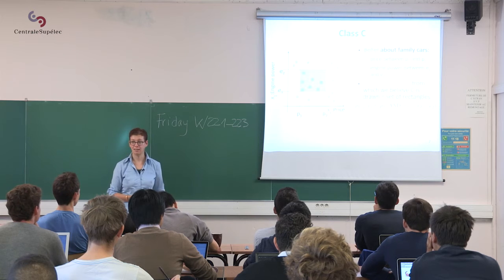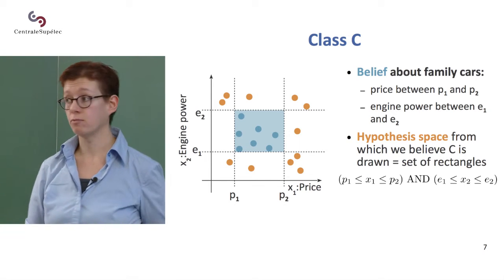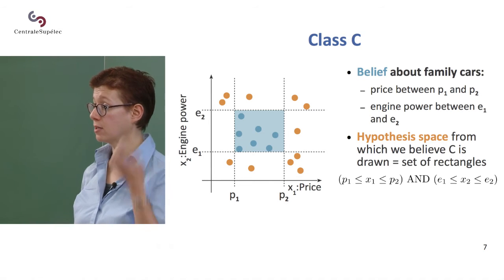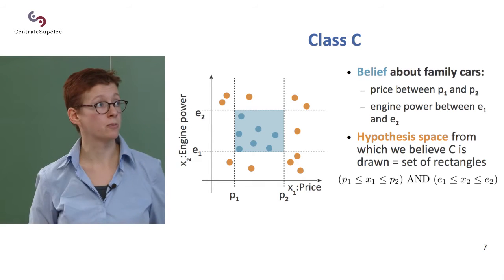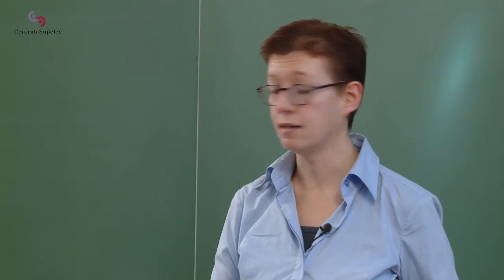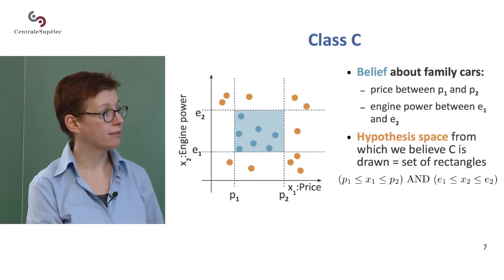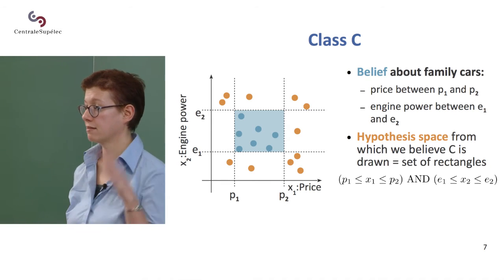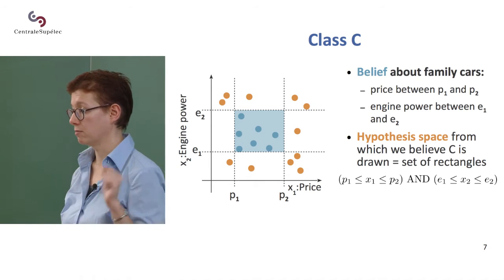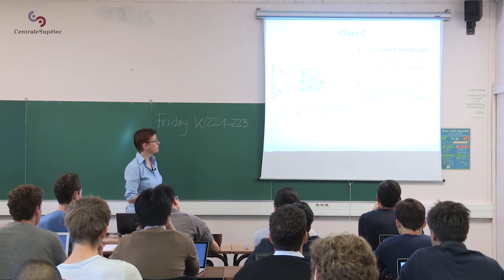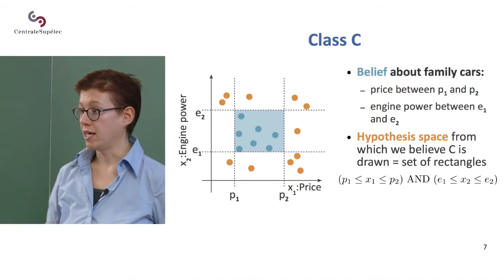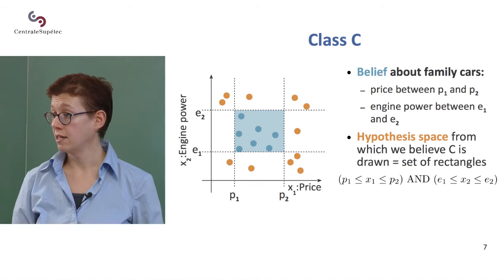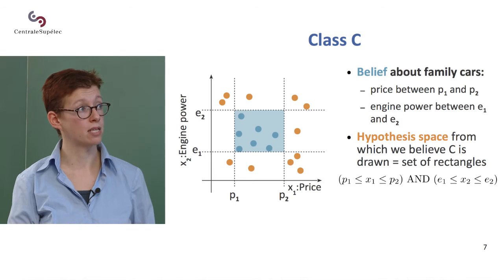We've said rectangles. This means we have defined a hypothesis space — the space of rectangles that are potentially separating the blue points from the orange points. You can define those rectangles by saying that positive examples (blue points) have their first dimension between P1 and P2, and the second dimension between E1 and E2. So you're looking at price and power independently from one another, which is why we're sticking to rectangles for now. A family car has a price between P1 and P2, and a power between E1 and E2. C, the class of family cars, belongs to the set of all rectangles defined in this fashion.